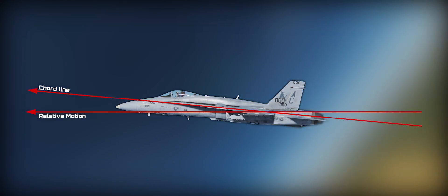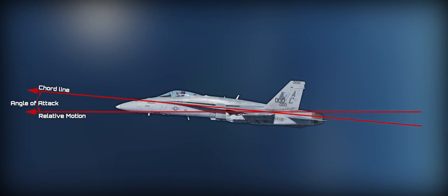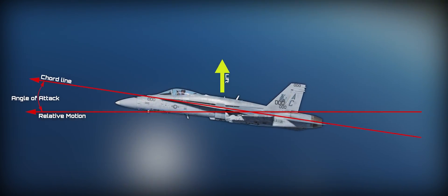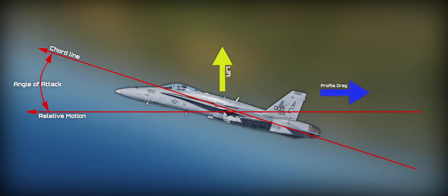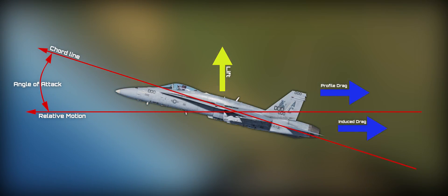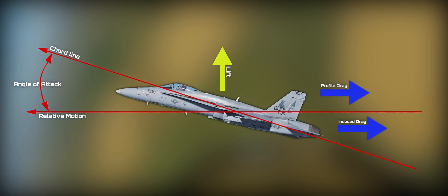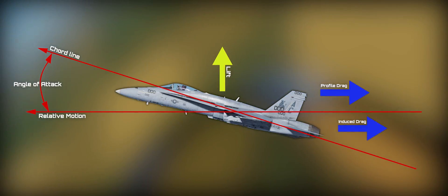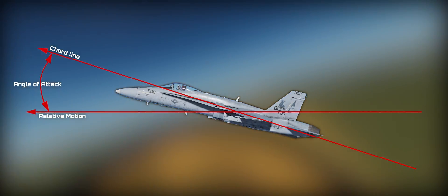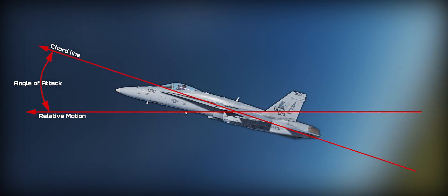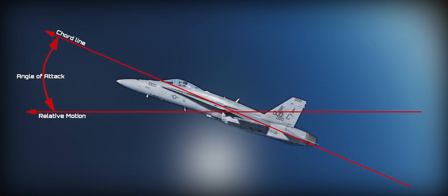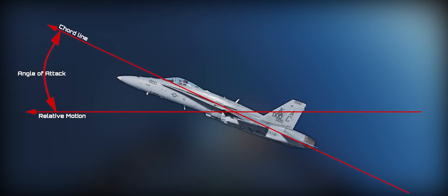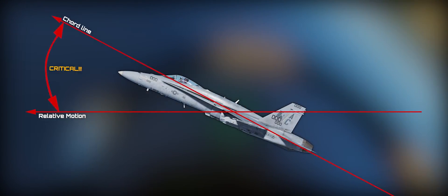Angle of attack is the angle between the chord line of a fixed wing aircraft and the vector representing the relative motion between the aircraft and the atmosphere. Increasing our angle of attack will increase our lift, but it will create more profile drag and induced drag caused by the wing generating lift. Increasing our angle of attack is a great way to increase our lift, but only to a point. This point is called the critical angle of attack — the angle of attack that produces the maximum lift coefficient. Anything past the critical angle of attack and the plane will stall.